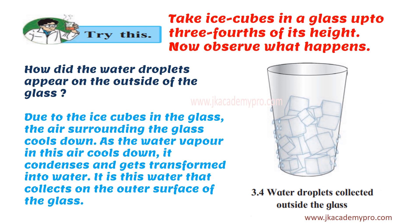This happened because due to the ice cubes in the glass, the air surrounding the glass cools down. As the water vapor in the air cools down, it condenses and gets transformed into water. We know that air is a mixture of many gases, and part of it is water vapor. This water vapor cools down around the glass, condenses, changes to its liquid state, and collects on the outside surface of the glass.